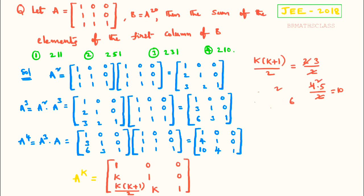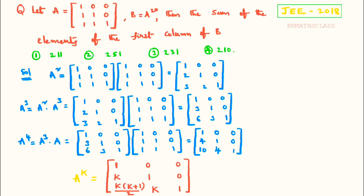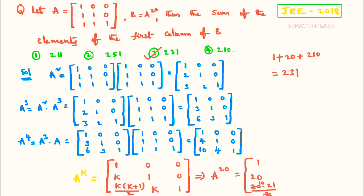What are they actually asking? The sum of elements of the first column of B, where B is A power 20. From the general formula, for A power 20, in place of k put 20. The first column elements are: 1, 20, and 20 into 21 divided by 2 which equals 210. Adding all three: 1 plus 20 plus 210 equals 231. So the third option is the right answer. I hope you understand this.